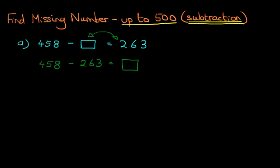And now we can answer this by using the vertical format. We have 458 minus 263. Now make sure you write these in nice, neat columns. And we can label the columns: units, tens, and hundreds.